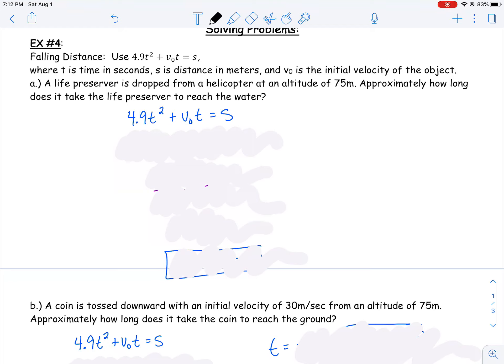You have some sort of an object, you might just drop it, which means your initial velocity is zero. Or you might throw it down, and then you have a certain initial velocity. You can figure out how far it's falling if you know how long it's been falling, or you might find how long it's been falling if you know the distance. All of those different things are variables in a quadratic equation.